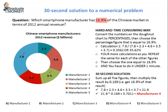And that's it. The correct answer is the manufacturer that generated 3.7 billion in annual revenue, which is manufacturer 4.